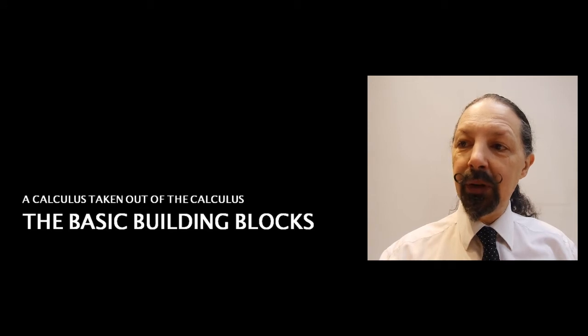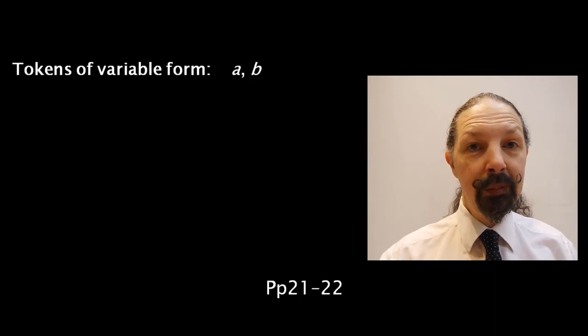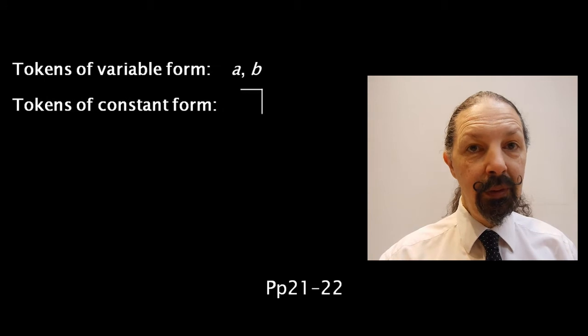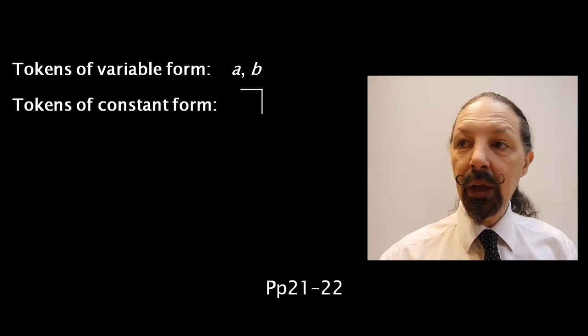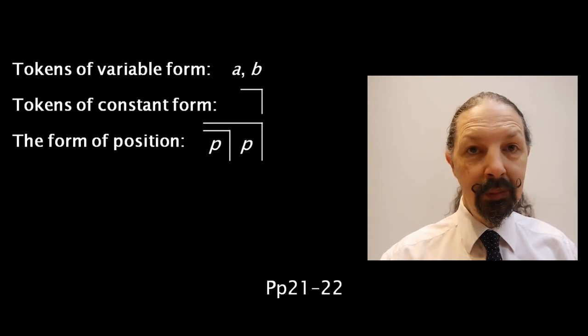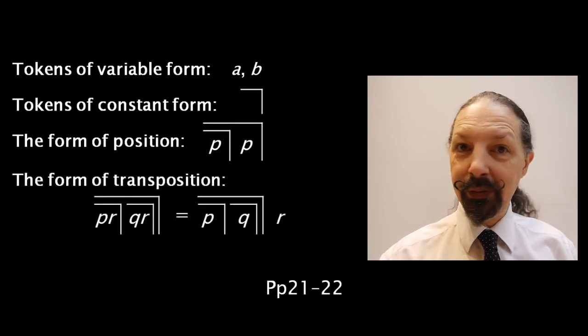So the basic building blocks of this calculus are going to be tokens of variable form, these are lowercase letters, tokens of constant form, these are marks, and the word constant is going to be important. The form of position, we know that from theorem eight. The form of transposition, we know that from theorem nine, our old friend.